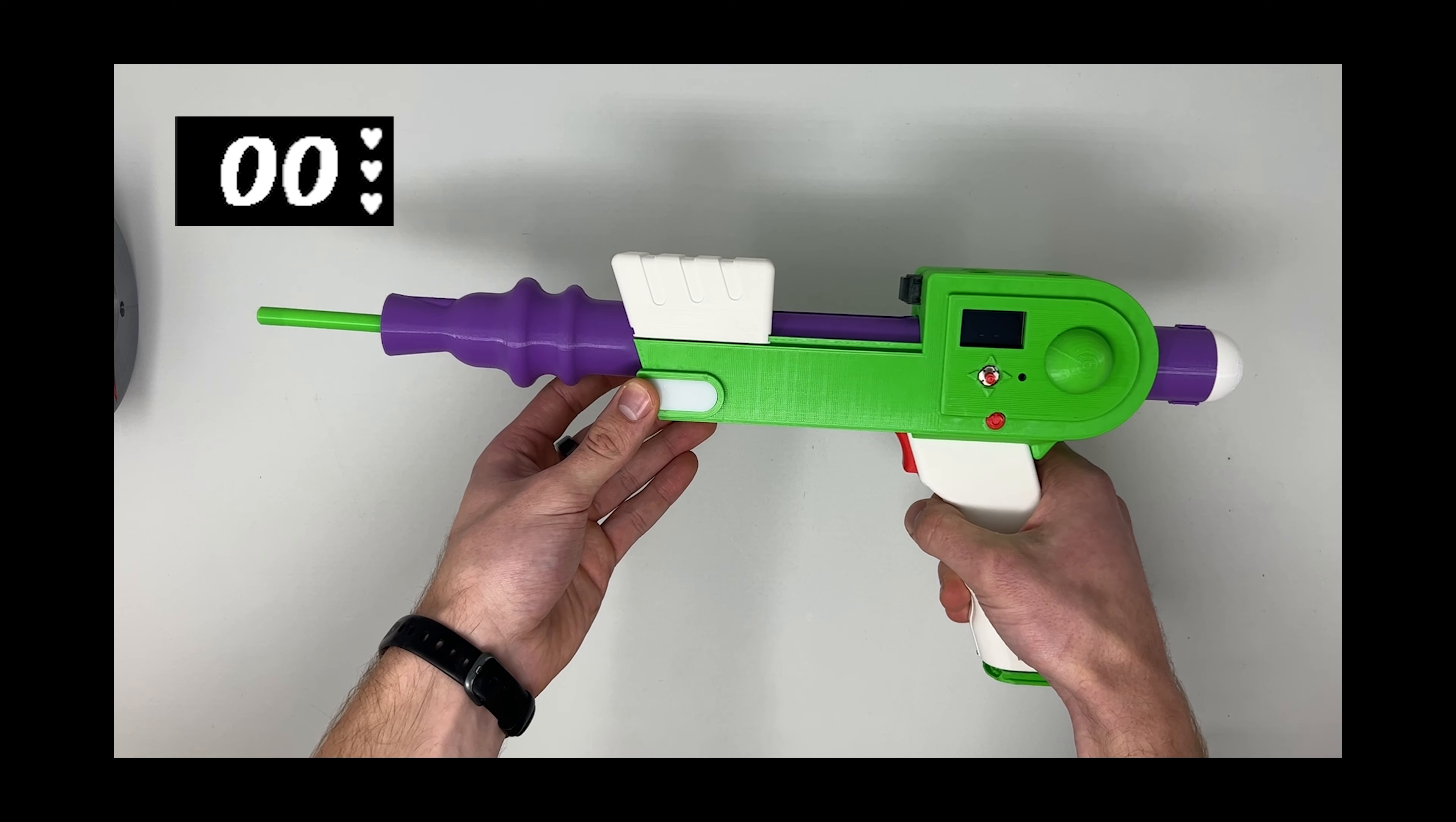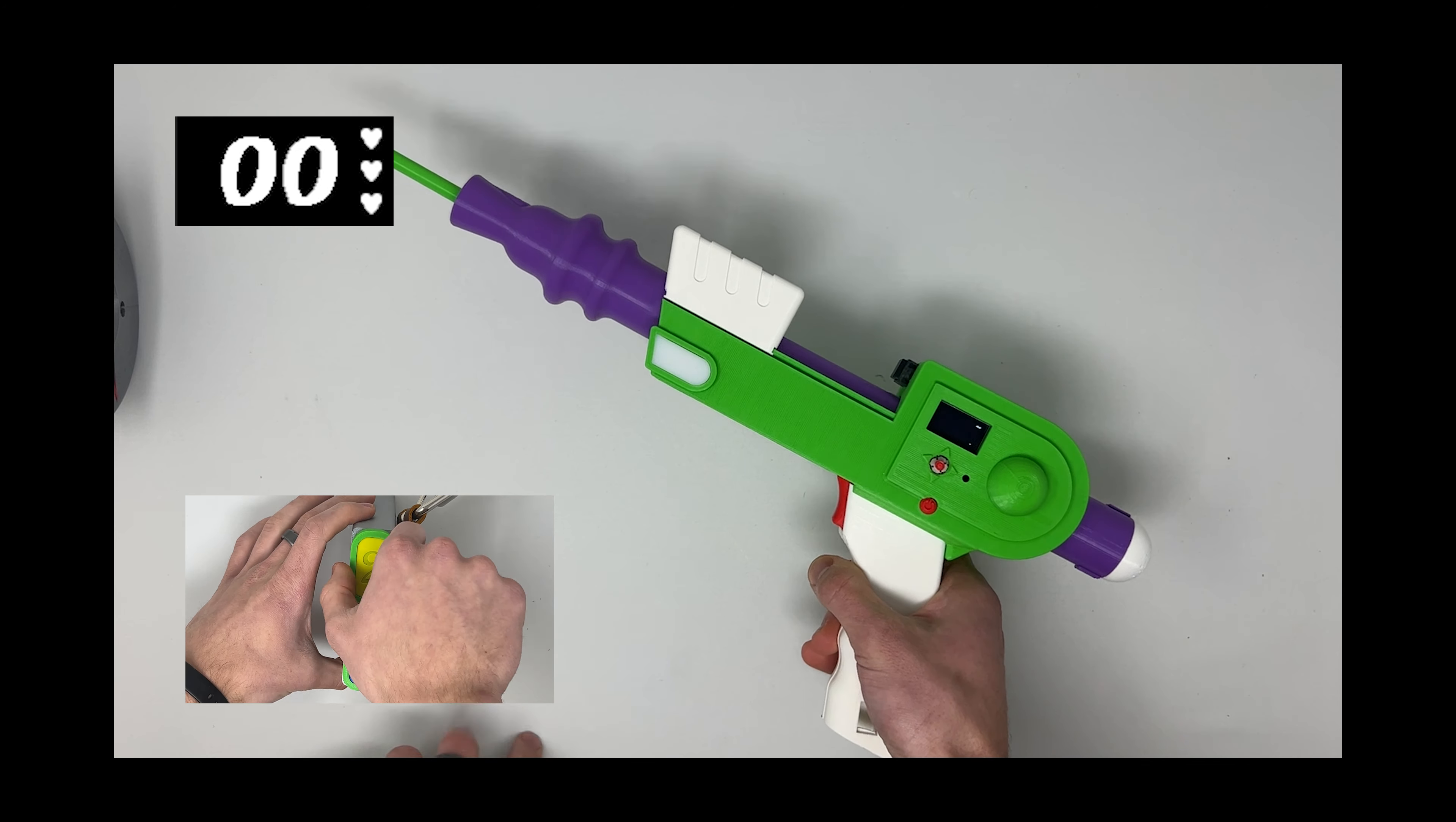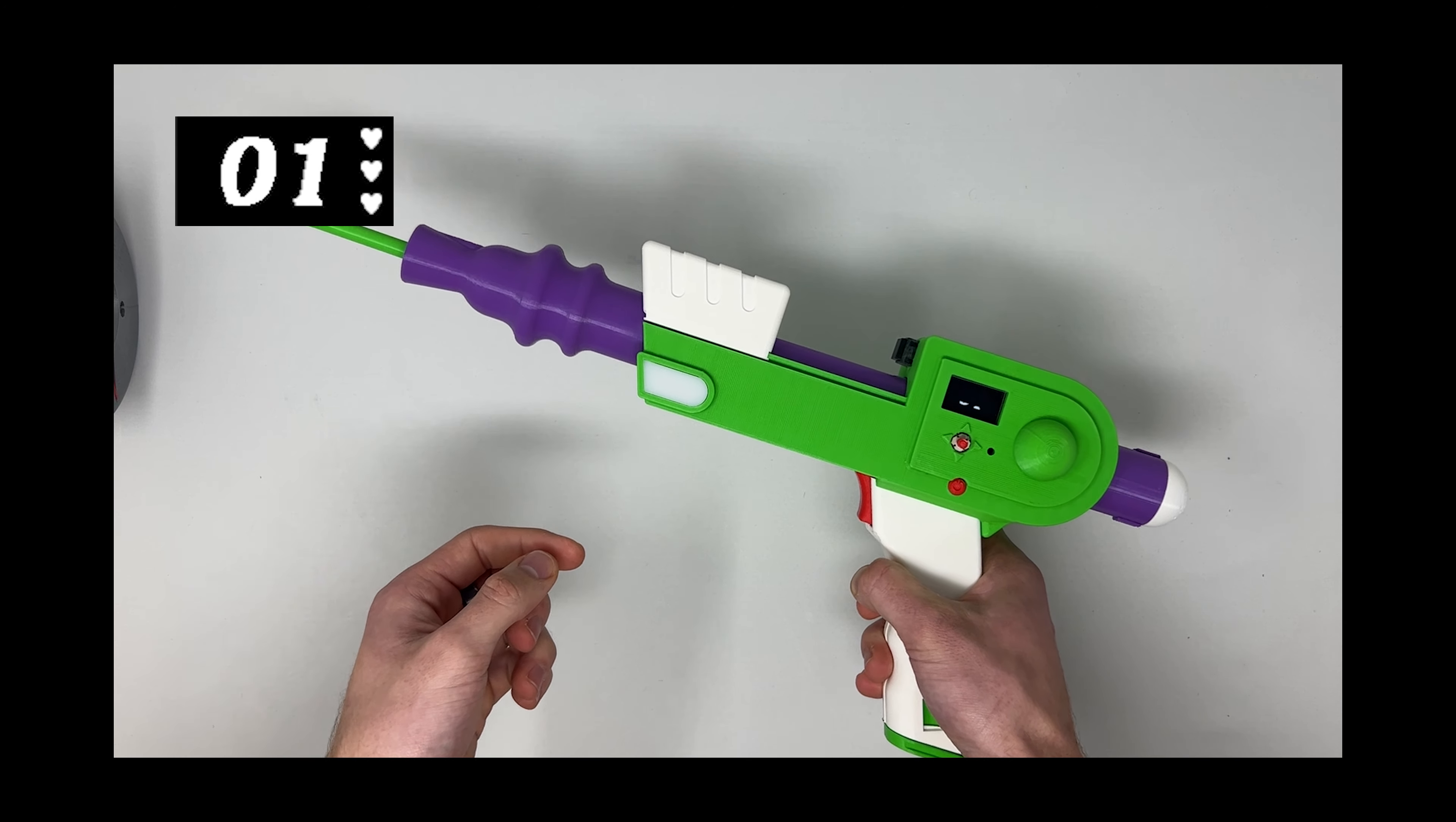There are three different commands. First there's Reload. This requires removing the clip that is currently in the blaster and replacing it with the other clip that can be found in your holster.